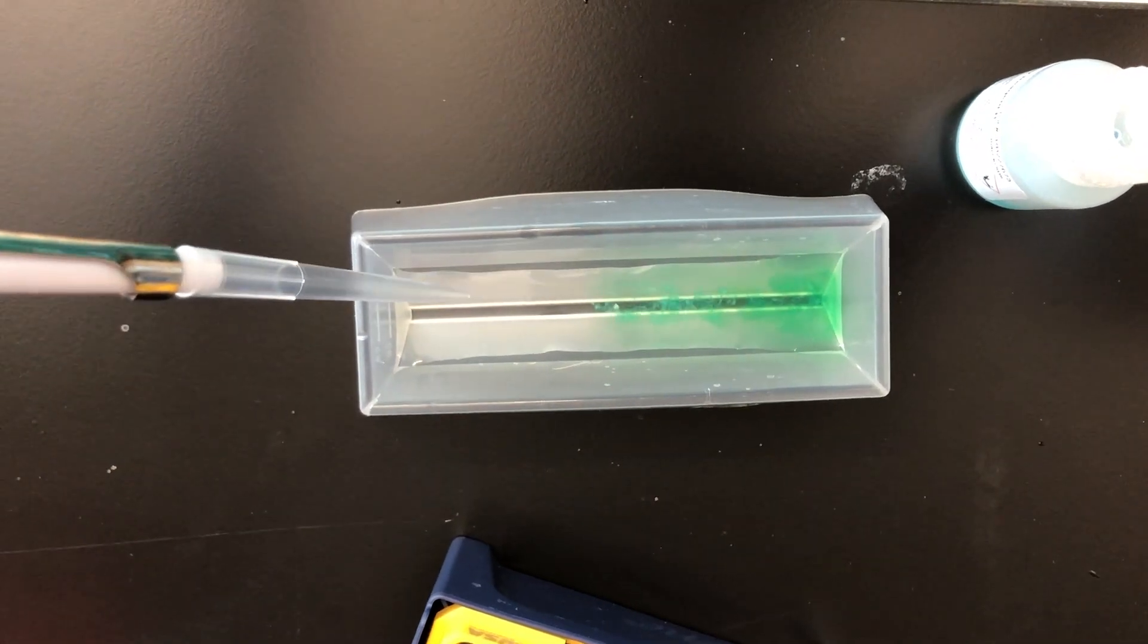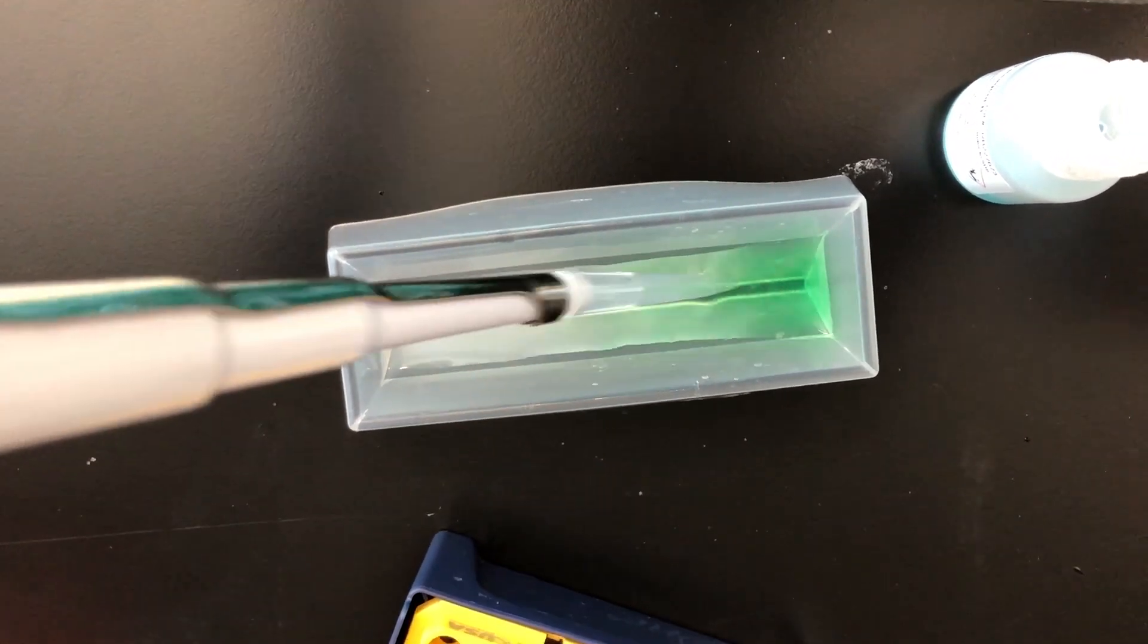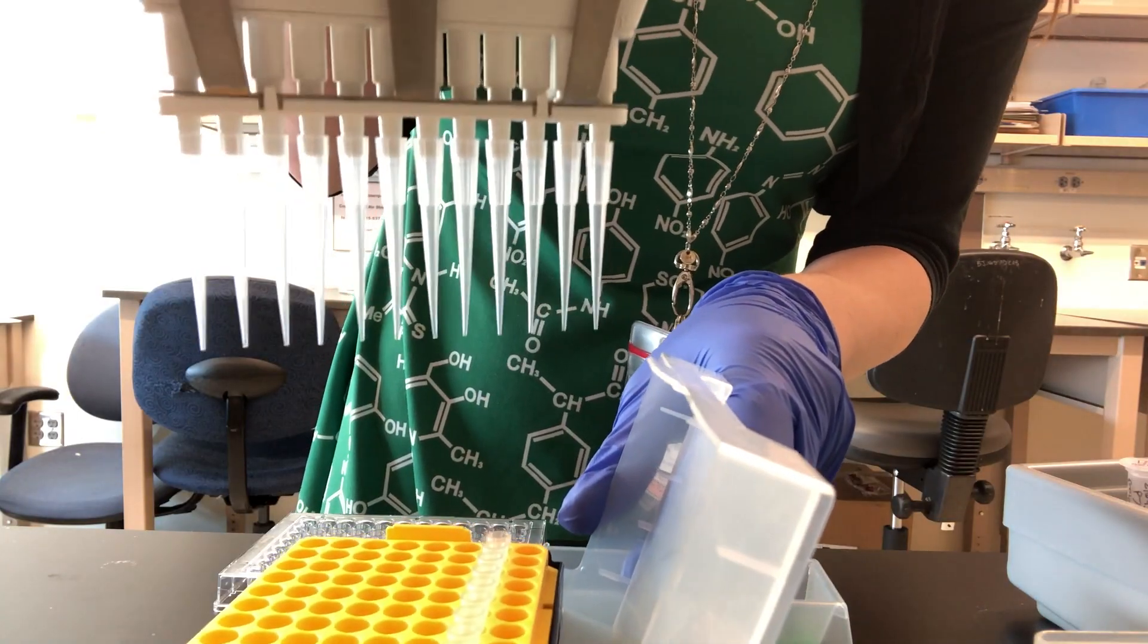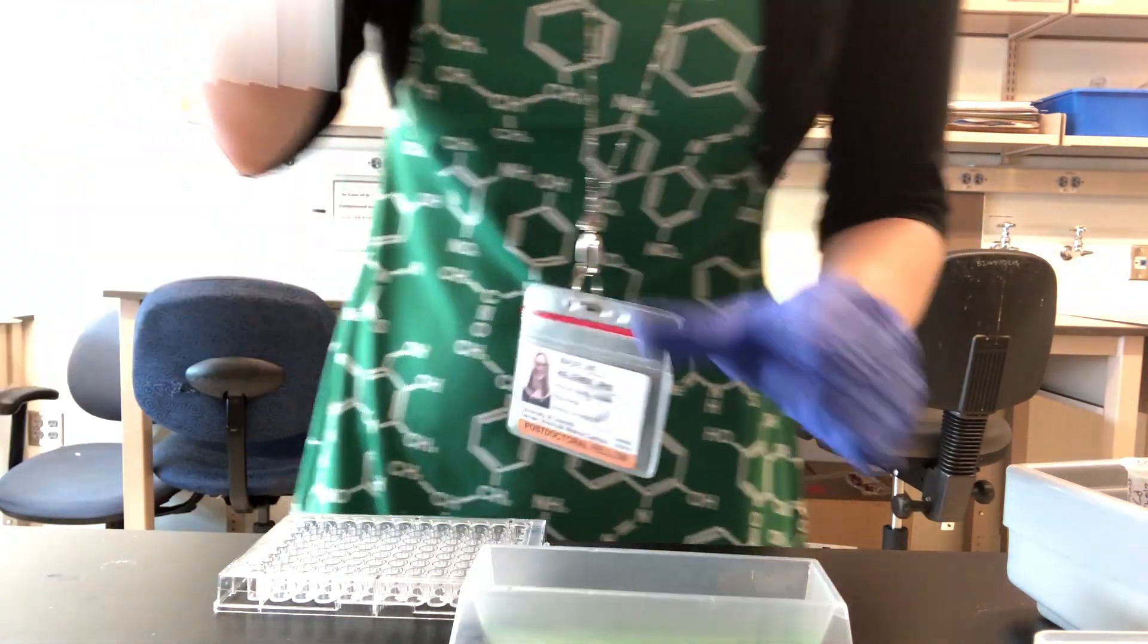So I add a mixture of reagent A and reagent B to each of the wells on my plate. This can be done quickly and accurately with a multi-channel pipette, which adds the same amount of liquid to 8 wells at once.